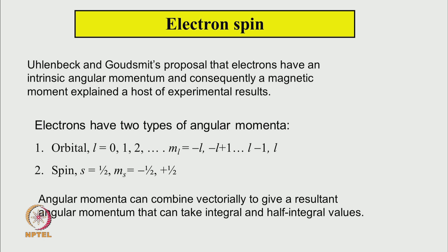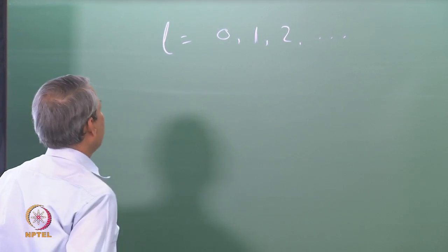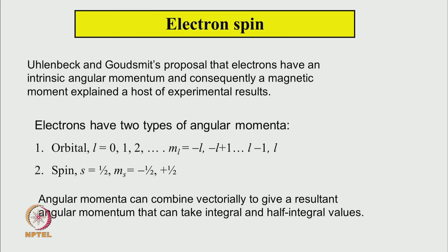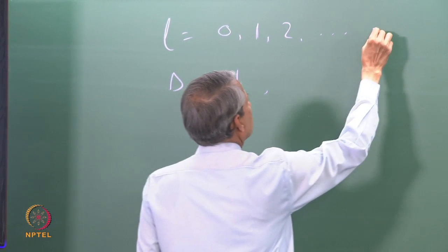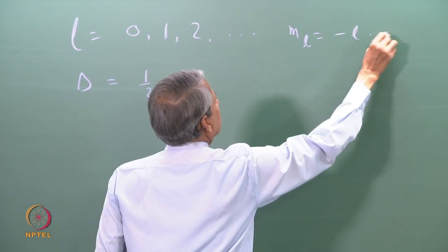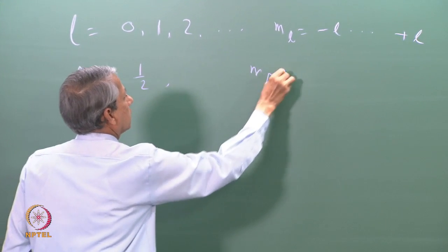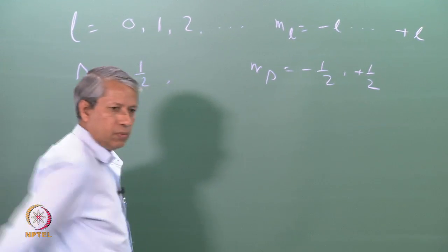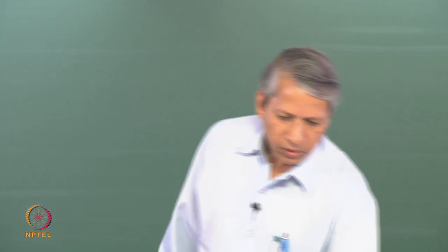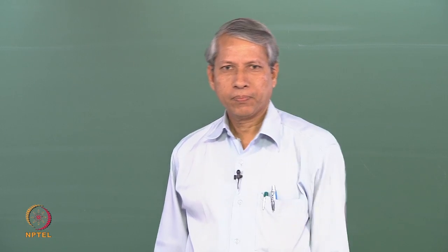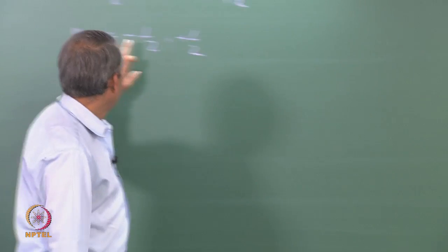According to Bohr's model, orbital angular momentum takes only integral values of l. According to Uhlenbeck and Goudsmit, spin angular momentum takes only half-integral values. The component of orbital angular momentum m_l runs from -l to +l, and the component of spin angular momentum s_z equals minus half or plus half. Angular momentum is a vector quantity, so the spin component being minus half or plus half indicates direction.